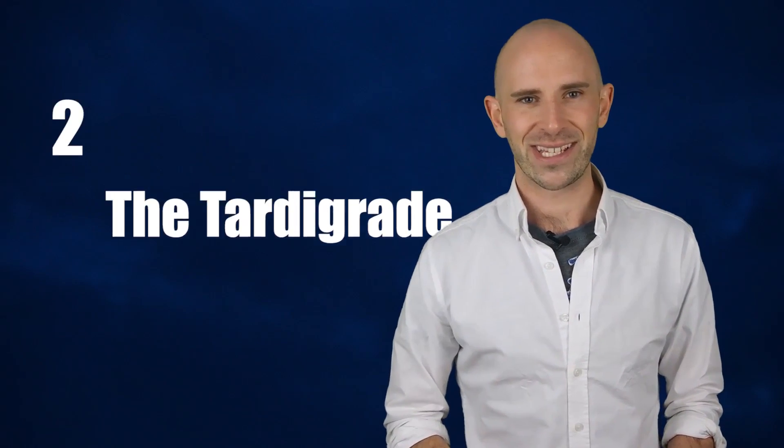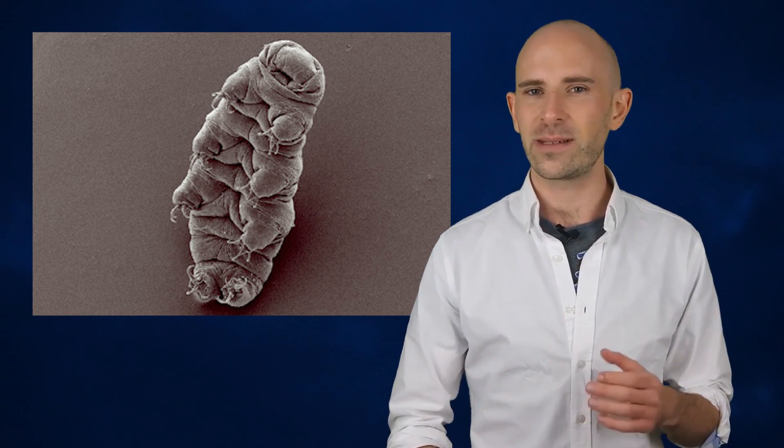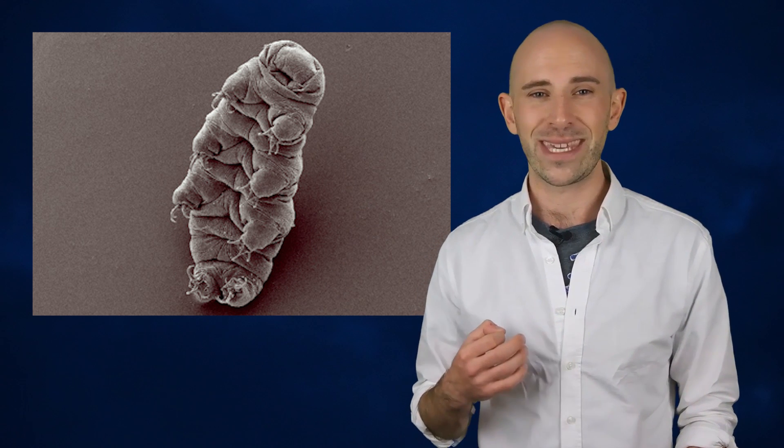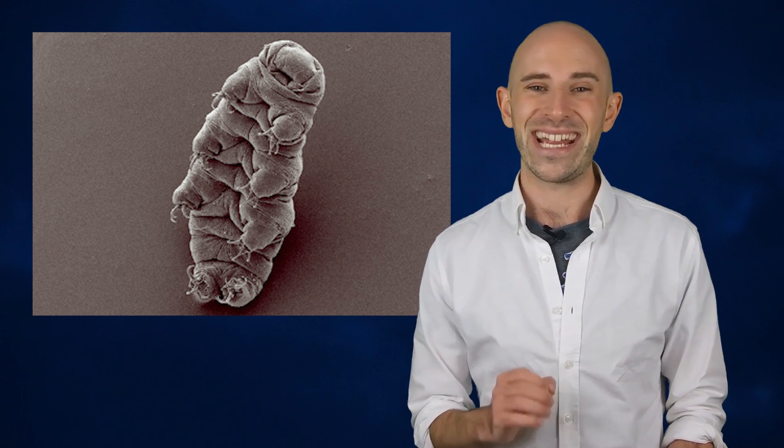2. The Tardigrade. Sounds like something out of Doctor Who, doesn't it? The Tardigrade, or water bear, makes the list on account of it being what scientists call an extremophile. This means they can withstand extremes that would put most animals to shame. They can be boiled, crushed, frozen, live in space, live without water, and be brought back to life after being clinically dead for almost a decade.